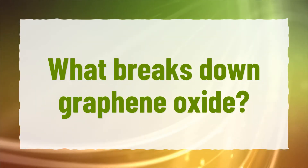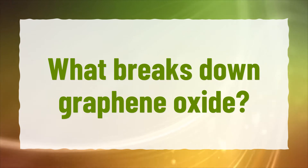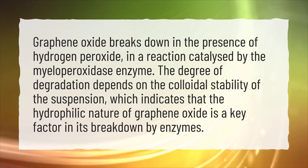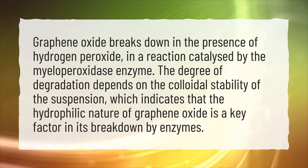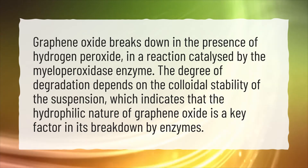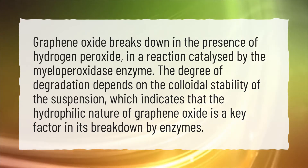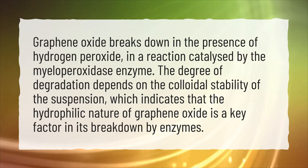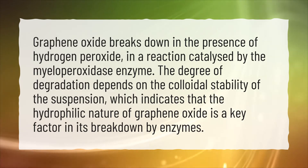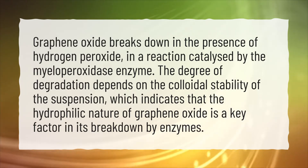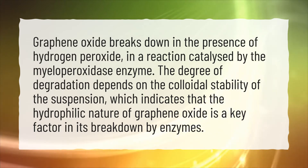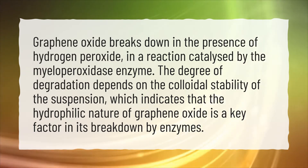What breaks down graphene oxide? Graphene oxide breaks down in the presence of hydrogen peroxide, in a reaction catalyzed by the myeloperoxidase enzyme. The degree of degradation depends on the colloidal stability of the suspension, which indicates that the hydrophilic nature of graphene oxide is a key factor in its breakdown by enzymes.